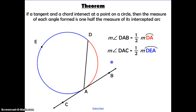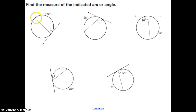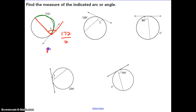This theorem says that if a tangent and a chord intersect at a point on the circle, then the measure of each angle formed is one-half the measure of its intercepted arc. Treat this like an inscribed angle — angle DAB has its vertex on the circle, so the angle measure is half the intercepted arc. For example, given an arc of 172 degrees, the angle is 172 divided by 2, which equals 86 degrees.